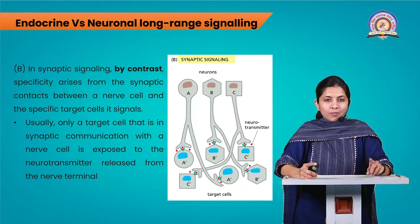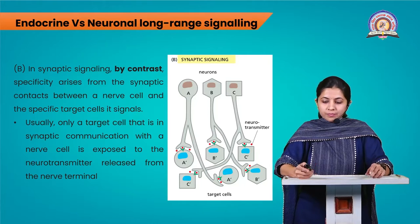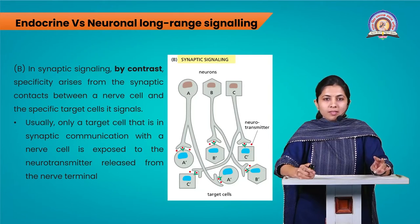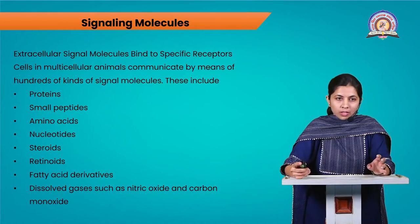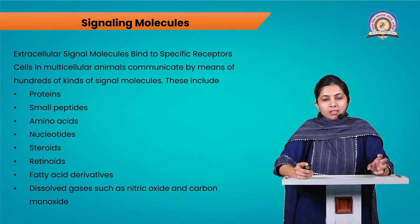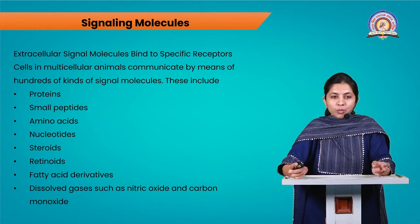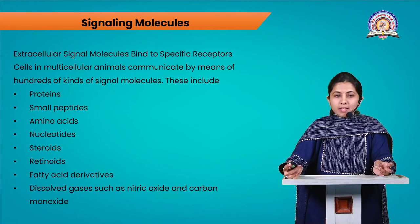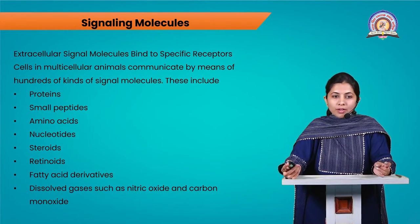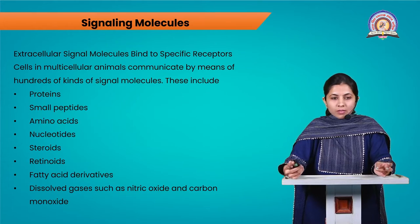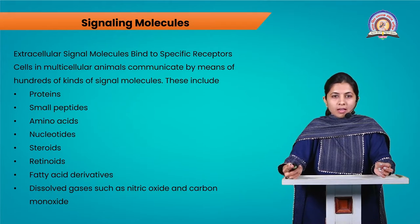Despite using the same neurotransmitters, neuronal signaling can function in a highly specific manner. These are the two types of long-range signaling mechanisms: endocrine and neuronal. Now, extracellular signal molecules that bind to specific receptors can be of different types. They can include proteins, small peptides, amino acids, nucleotides, steroids, retinoids, fatty acid derivatives, or dissolved gases like nitric oxide and carbon monoxide.